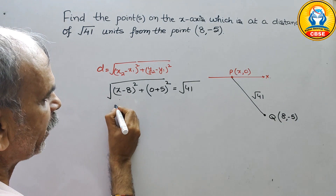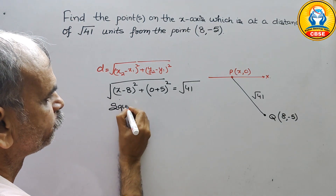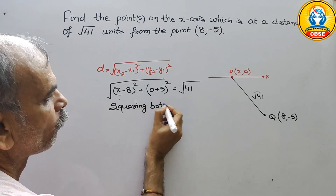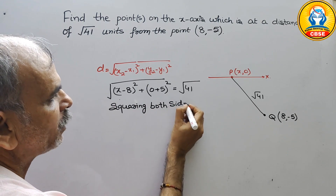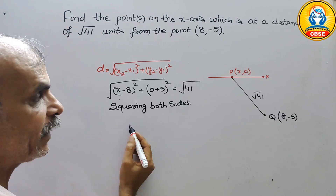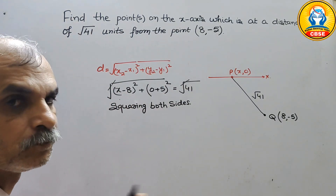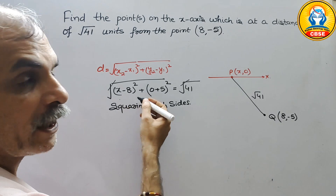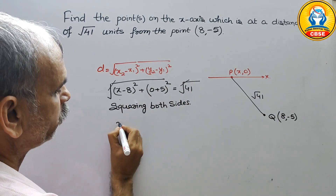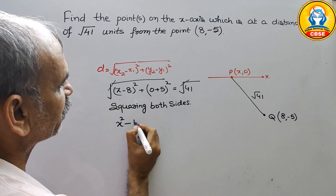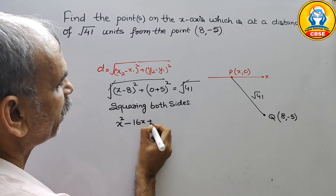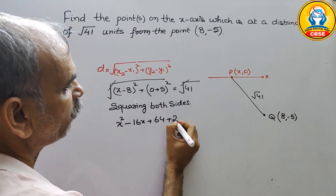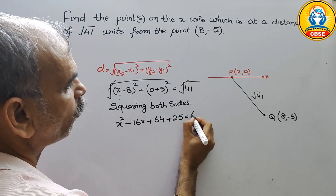Now next step is squaring both sides. Squaring करेंगे तो square root will go out। X minus 8 whole square को solve करना है using (A minus B) whole square formula: X square minus 16X plus 64, plus 5 square is 25, is equal to 41.